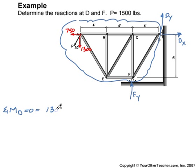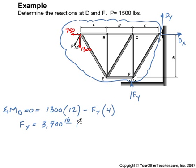So we have 1300 times the 12 feet, and that is positive rotation. Then we have F_Y, and the perpendicular distance is this 4 feet right here. So solving for F_Y, we get 3900 pounds. Got a positive value, so our upward arrow is correct.